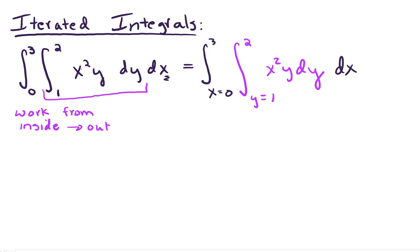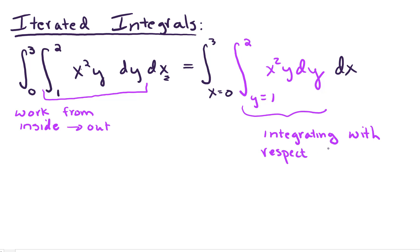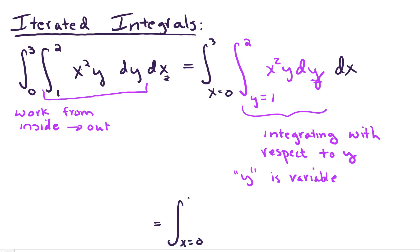When we work on this inner integral, we're integrating with respect to y — y is our variable, and everything else we treat like a constant. It's kind of like partial derivatives, but now it's integration. So let's copy down the outermost integral: x equals 0 to 3, with dx on the back end. Now let's work on this inner integral: what is the antiderivative of x² y? Keep in mind x is acting like a constant — I could call it k — so this is k times y.